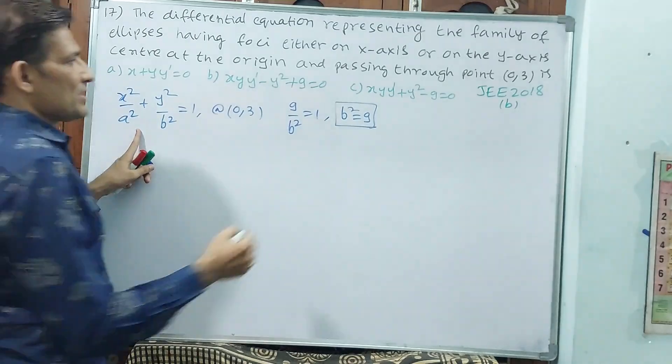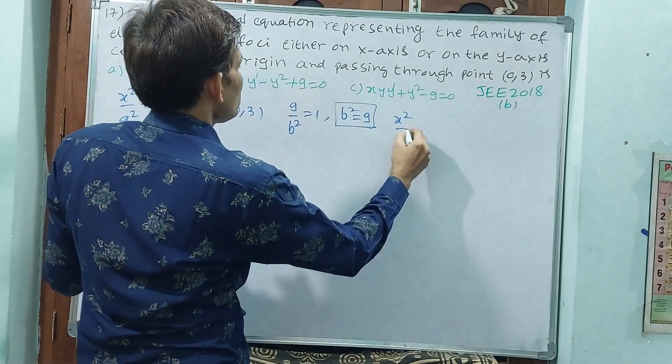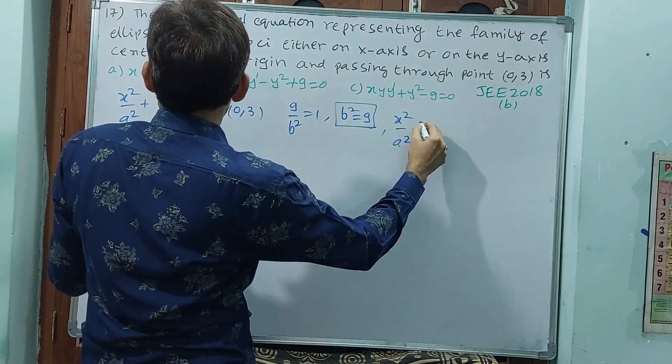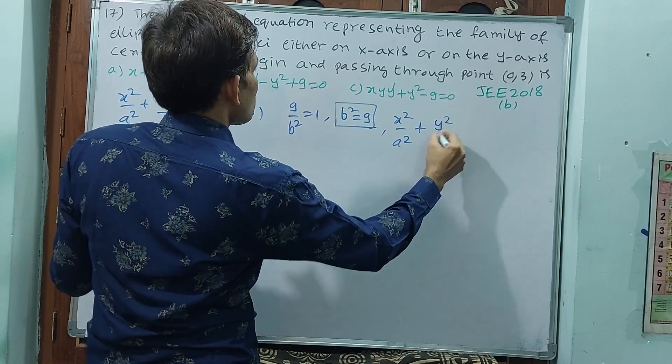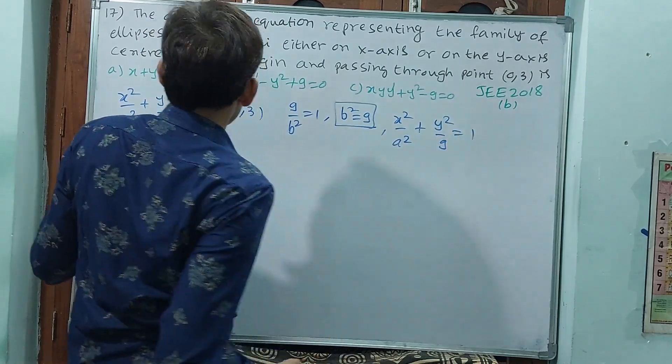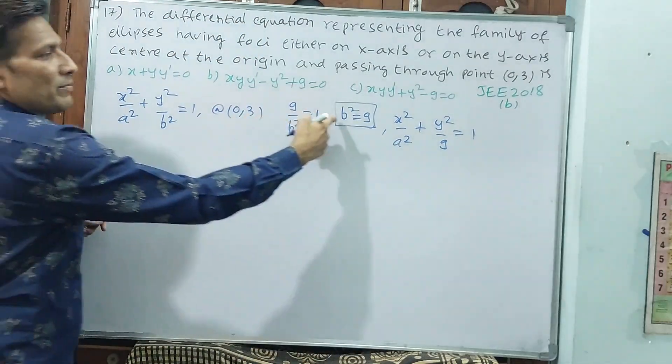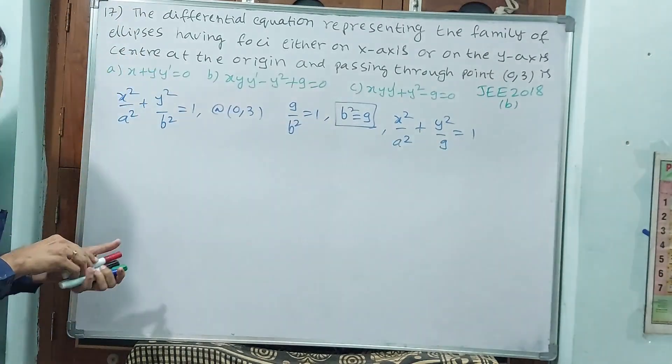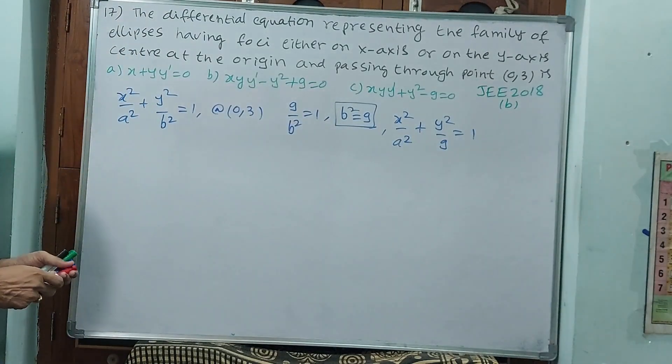Then if we rewrite this equation, x square by a square plus y square by 9 is equal to 1. b square value, I will replace it with 9. Observe how we are changing.